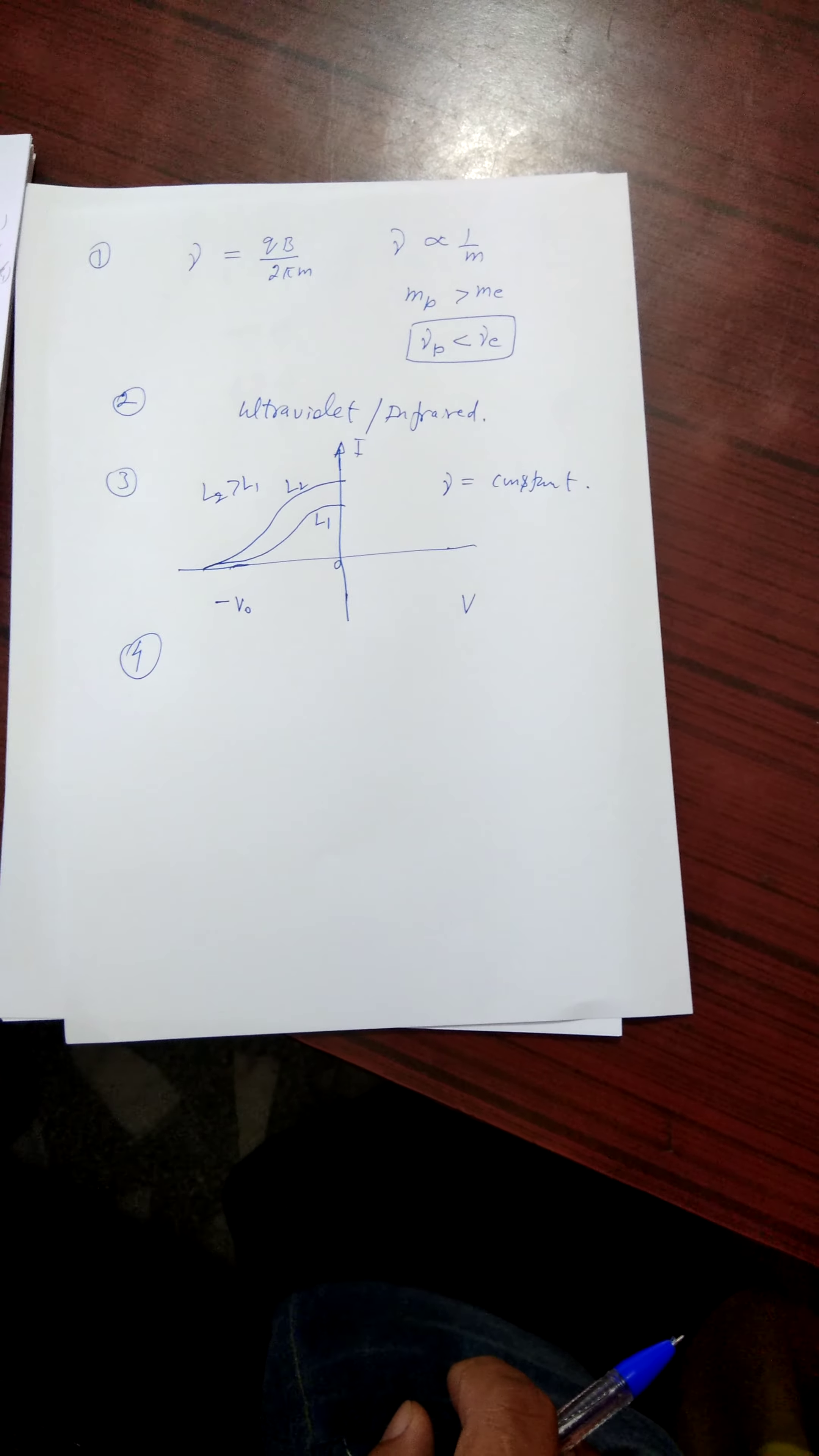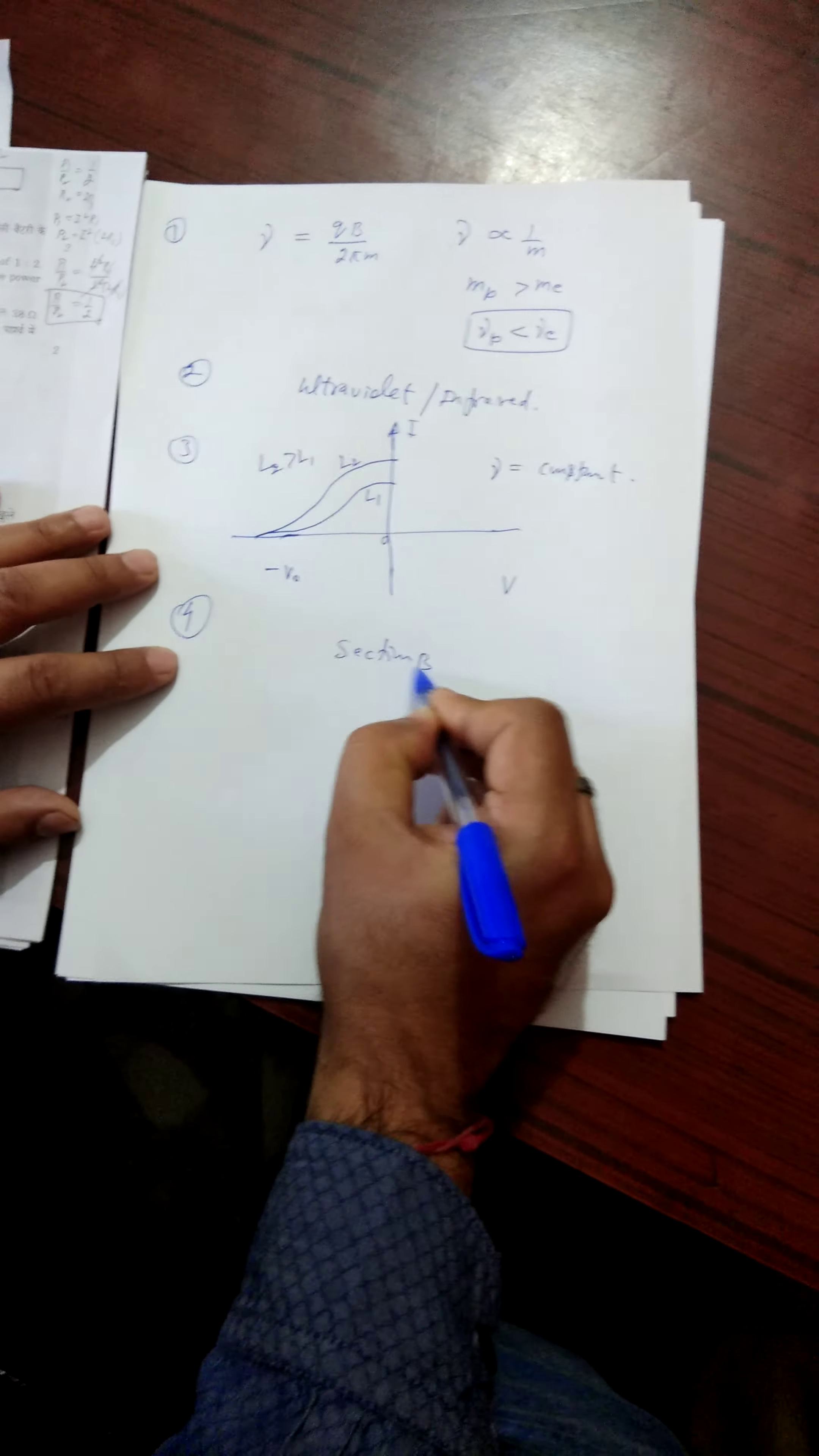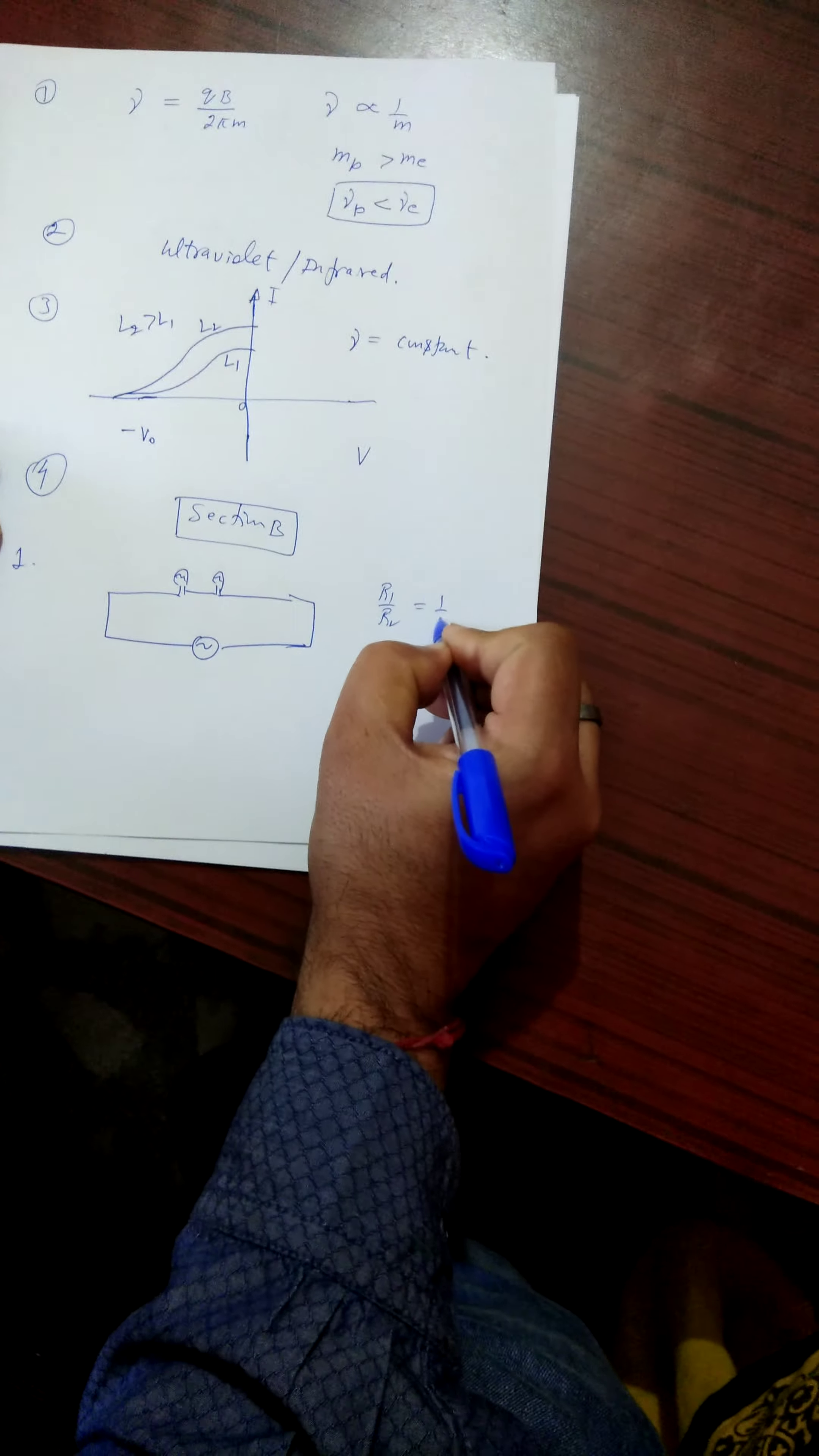Now section B, question first. Two electrical bulbs P and Q have their resistances in the ratio 1 is to 2. They are connected in series across a battery.